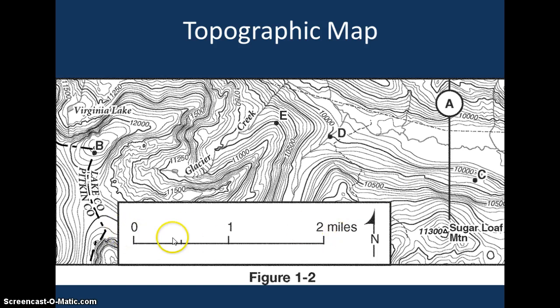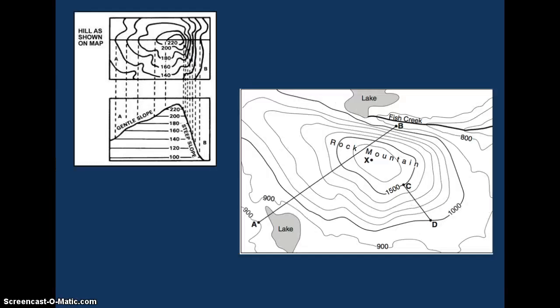Maps generally are going to have a scale to help you determine what the measurement would be, or what each inch or certain measurement exists in real life. Here's a profile of a mountain. Profile would be the side view. You can see if we look at the topographic view, where the lines are further apart, we have a more gentle slope. Where the lines are closer together, we have a more steep slope.